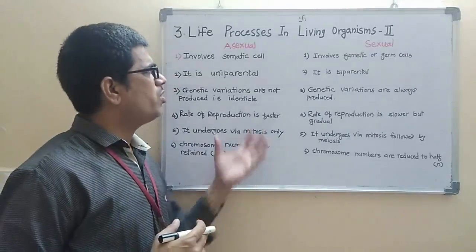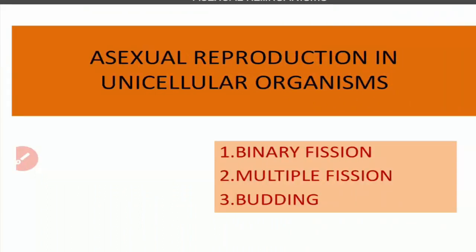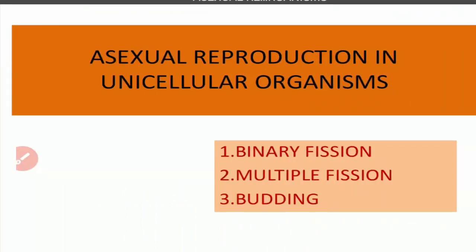Now we will discuss asexual reproduction in unicellular organisms. It is divided into two main portions: fission and budding. The fission process is further divided into binary fission and multiple fission, so some books list three types: binary fission, multiple fission, and budding. We will discuss each one by one.